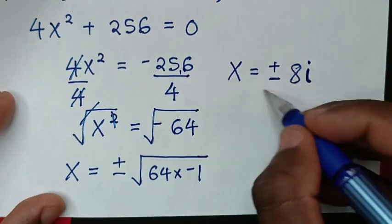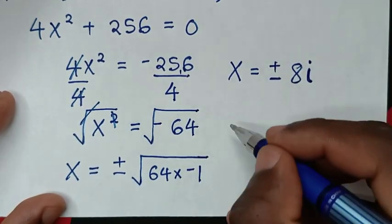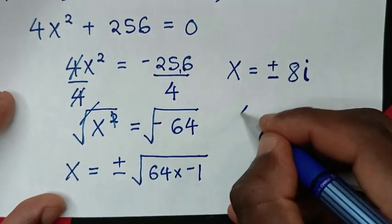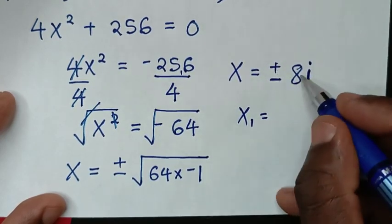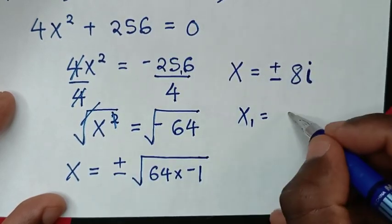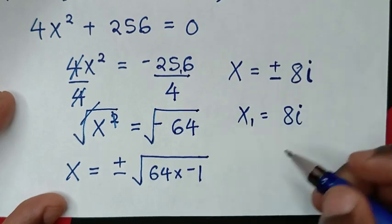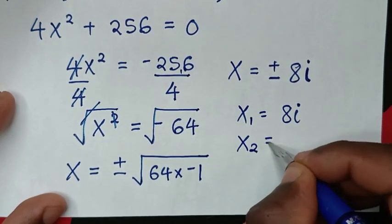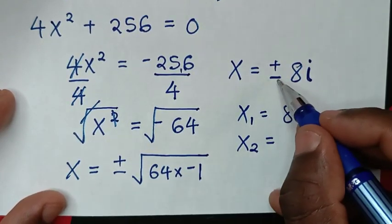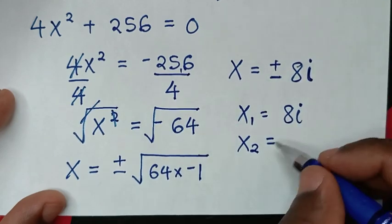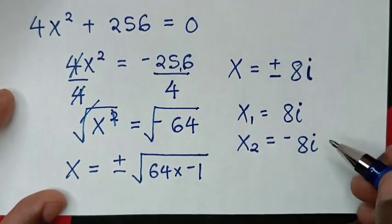Because of the plus or minus, we have two solutions. The first value of x is positive 8i, and the second value of x is negative 8i.